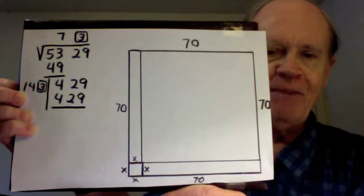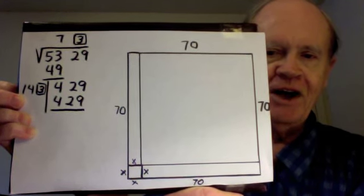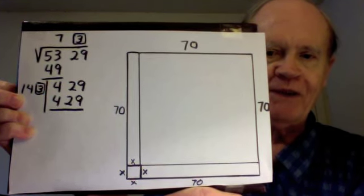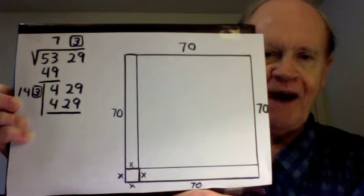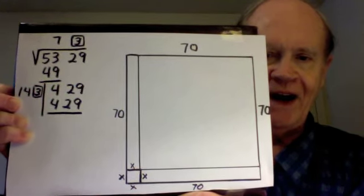So that is my geometric interpretation of the square root algorithm, specifically of the square root of 5329. Thank you for watching this solution video.